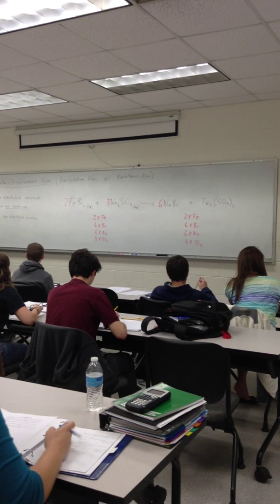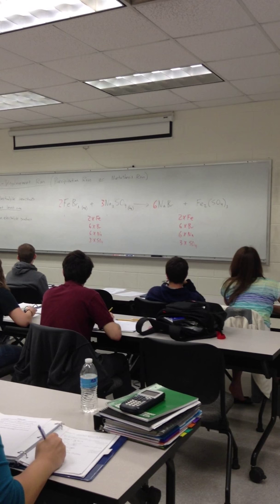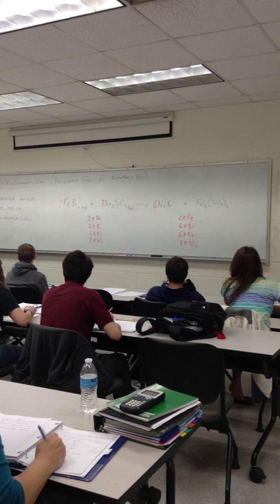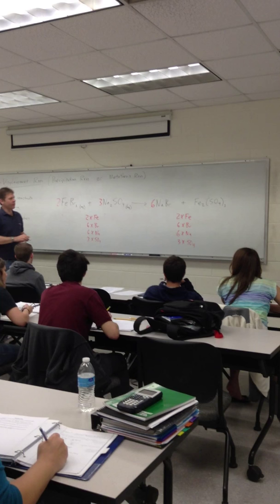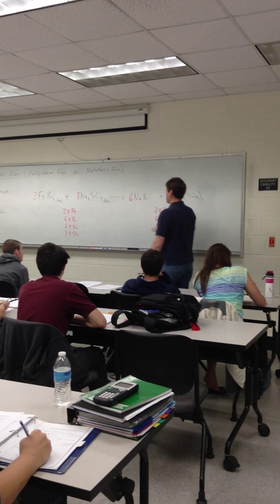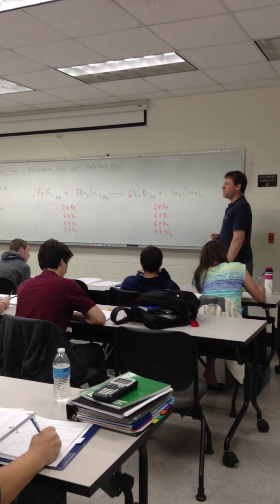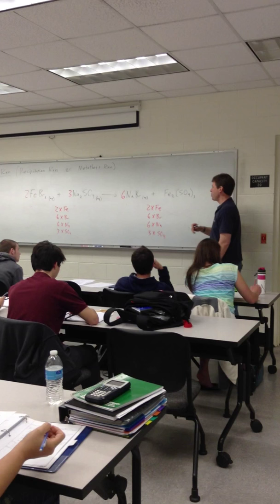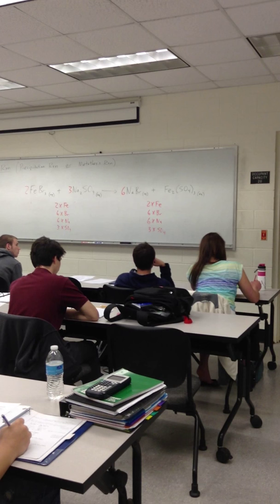That was a lot of work, wasn't it? Now, after all that work, will this reaction even work? Well, let's look at the solubility table. What about sodium bromide? Is that water soluble? Yes. Yes, it is. It's got a group 1 cation. What about iron 3 sulfate? It, too, is water soluble. Like most sulfates, it's water soluble. Iron 3 was not an exception. So after all that work, this reaction will not even work. We just wasted our time. Isn't that nice?